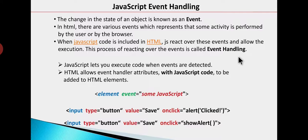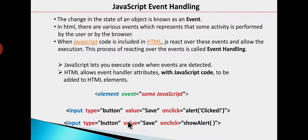So this is what is called event handling — we handle the event by writing JavaScript code. Now let's look at the syntax. Here we have an element, which is an input type button. We want to handle the onclick event, and this is the JavaScript code associated with that onclick event.